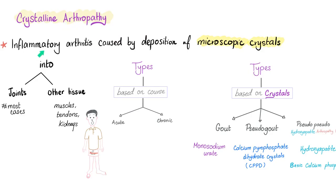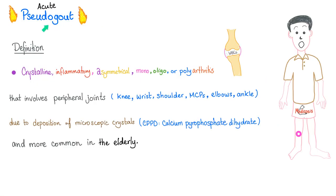Crystalline arthropathy is inflammatory arthritis caused by deposition of microscopic crystals into the joints or other tissues. It could be acute or chronic types based on the crystals. In gout, it was monosodium urate crystals. In pseudogout, which is today's topic, it's calcium pyrophosphate dihydrate crystals — CPPD. Pseudo-pseudogout, also known as hydroxyapatite arthropathy, involves hydroxyapatite crystals, also known as basic calcium phosphate crystals.